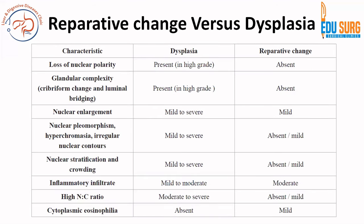Coming to the difference between reparative change and dysplasia: dysplasia is an important precursor to malignancy whereas reparative change is not. In dysplasia, there is high nuclear-to-cytoplasmic ratio and loss of nuclear polarity, especially in high-grade dysplasia, and cribriform change in the glands is common in high-grade dysplasia. Nuclear pleomorphism and changes such as hyperchromasia, irregularity, stratification, and crowding are more common in mild to severe dysplasia and absent or very mild in reparative change. This is important because management changes in terms of surveillance and treatment for malignancy.